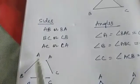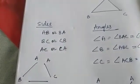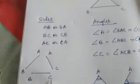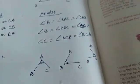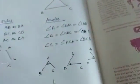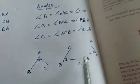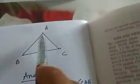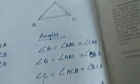The names of the sides can be written in either direction: AB or BA, BC or CB, AC or CA. Similarly, the corners of the triangle are called the angles.